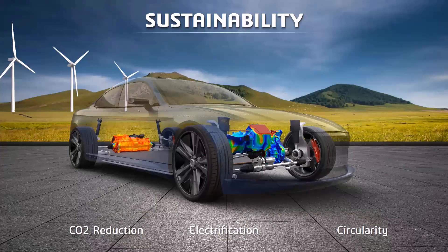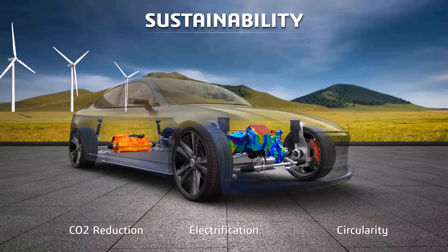Simulation is playing a major role in supporting these goals. Simulation can help you investigate early how your product is going to behave — for example, if you design it with a different material, will it still perform or not. There are many areas where simulation can support the development process to meet sustainability goals, efficiency goals, and everything related to that.